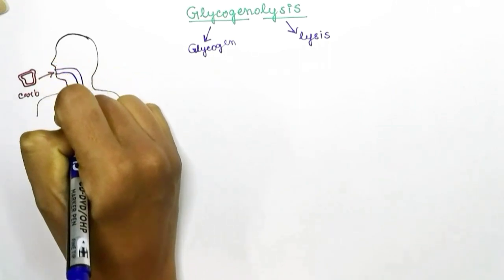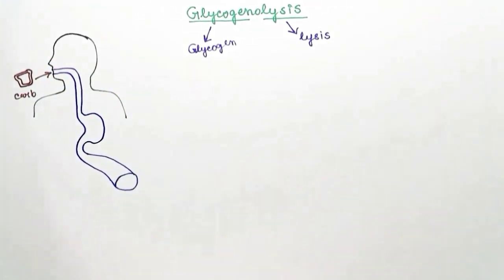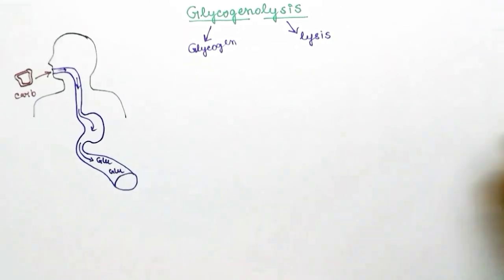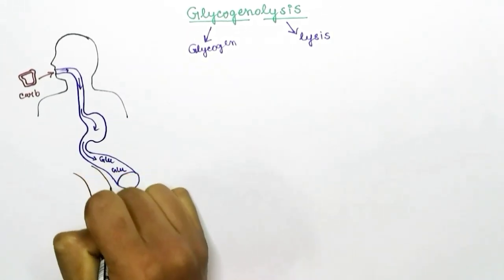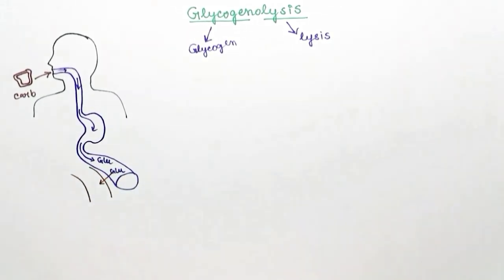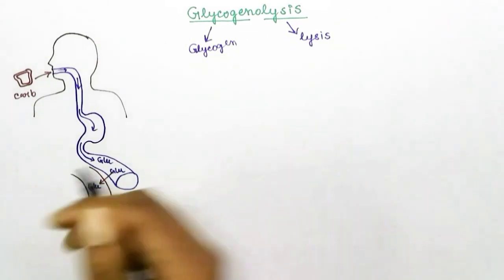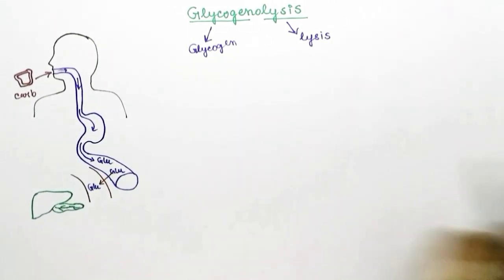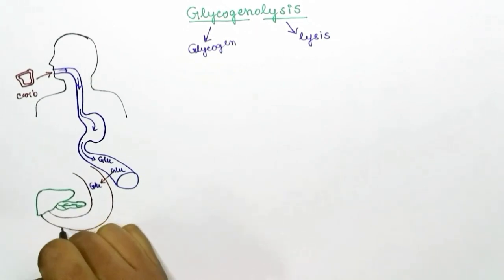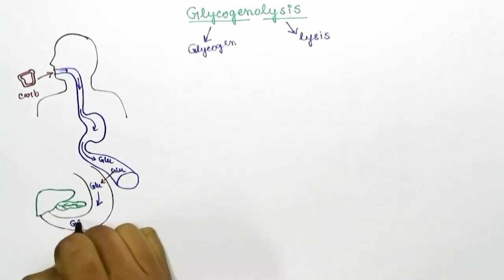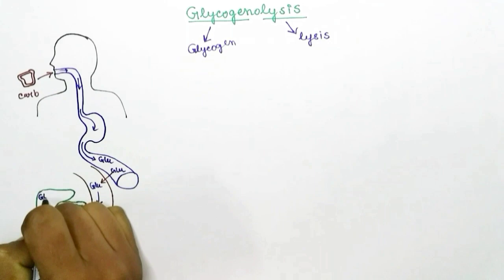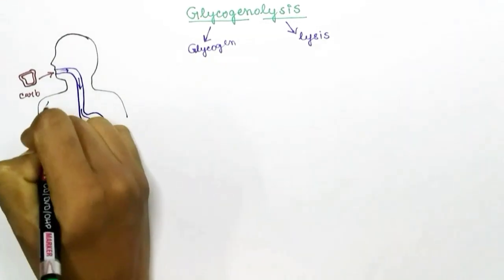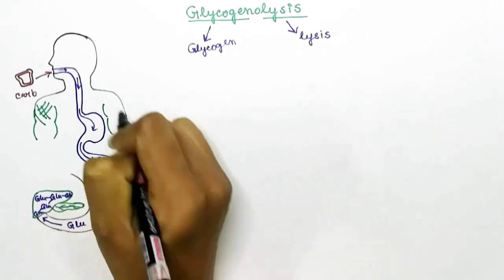Glycogen is a storage material of the animal body. The animal body stores glucose as glycogen; it is a polymer of glucose. When we eat carbohydrate-rich food, the food gets broken down in our intestine into glucose molecules, and then the glucose gets absorbed into the bloodstream.